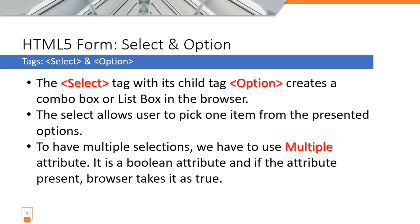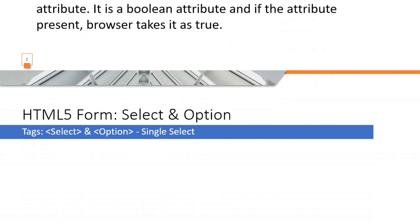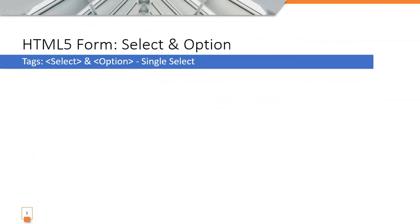The multiple attribute is a boolean attribute. When the attribute is present, the browser takes it as true — you do not need to specify true or false. When present, the browser renders the select as a list box and allows multiple selection.